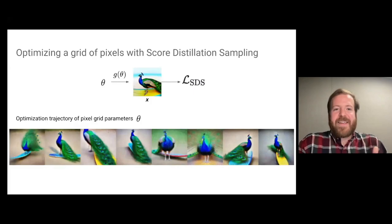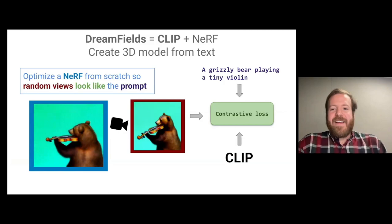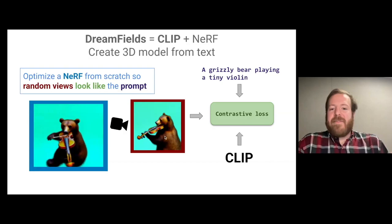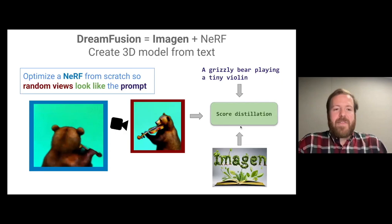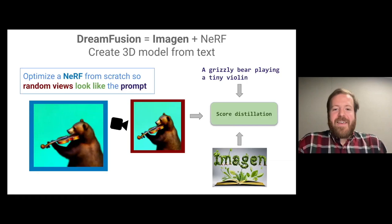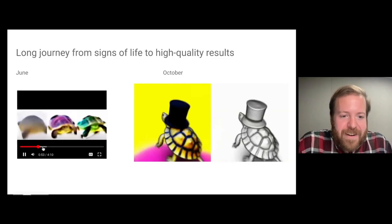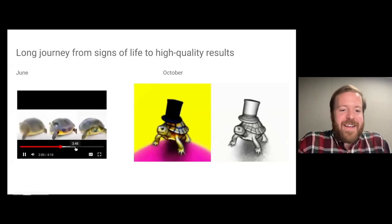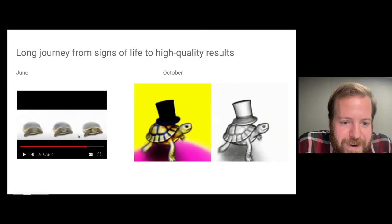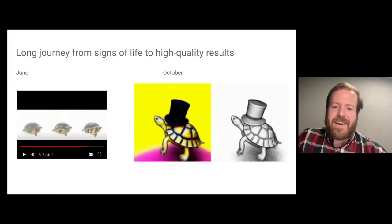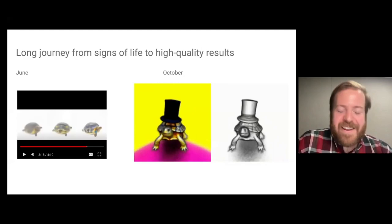Returning to our Dream Fields framework, we had a NeRF rendered to an image from a random view, compared to text using a contrastive CLIP loss. Now we swap that out for the score distillation loss derived from the Imagen diffusion model. Our first results looked okay — a painted turtle — but were blurry and low resolution. The final released results — like a golden tortoise with a top hat — are much higher quality. Several tricks were needed to get there.